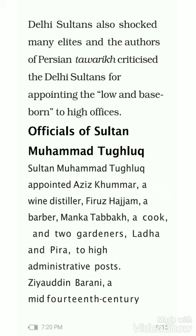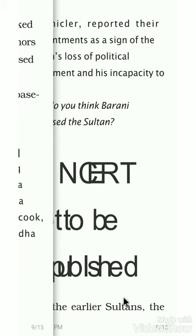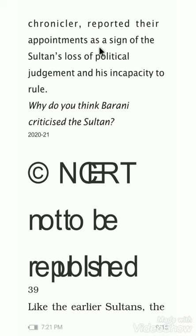The patronage of humble-born people by the Delhi Sultans shocked many chroniclers. Persian tawarikh criticized the Delhi Sultans for appointing 'low and base born' individuals to high offices. For example, Sultan Muhammad Tughlaq appointed Aziz Kumar — a wine distiller, Feroz Hajjam — a barber, Manka Tabak — a gardener, Ladha and Pira to high administrative posts. The chronicler Ziauddin Barani called this a sign of the Sultan's loss of political judgment.